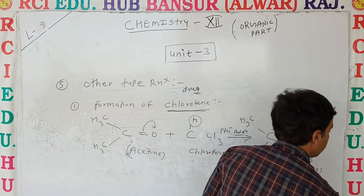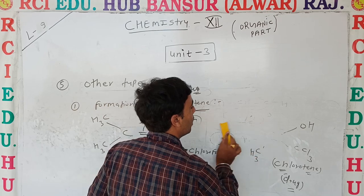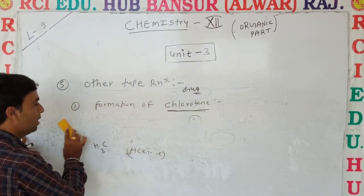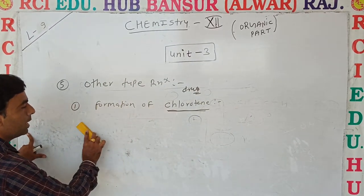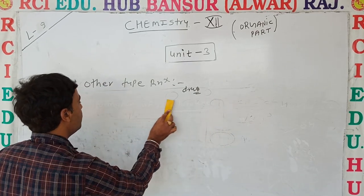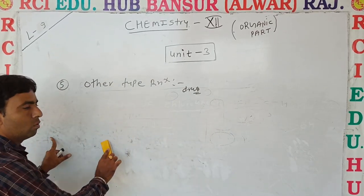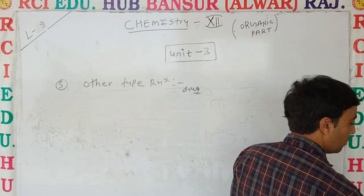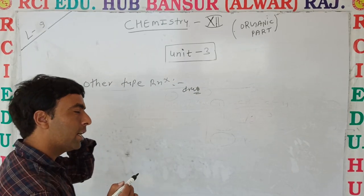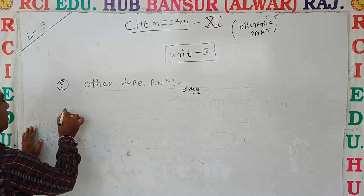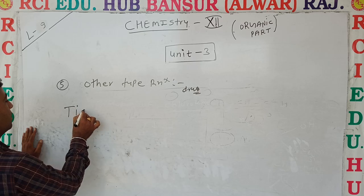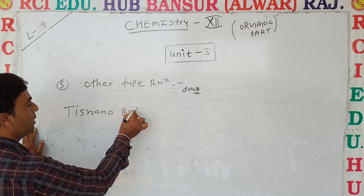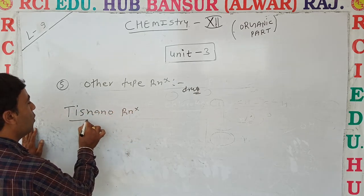This is a type of reaction. Chloretone is very important. The formation of chloretone uses chloroform, and acetone is used as the proper reactant. Next is another type of reaction.